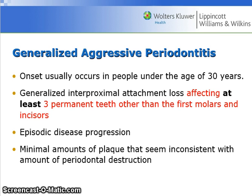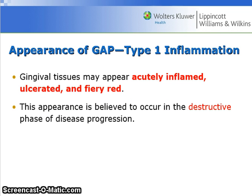Generalized aggressive periodontitis usually has an onset in people under the age of 30. It is generalized interproximal attachment loss affecting at least three permanent teeth other than the first molars and incisors. It has an episodic disease progression and the minimal amounts of plaque seem inconsistent with the amount of periodontal destruction. This appearance of GAP type 1 inflammation: gingival tissues may appear acutely inflamed, ulcerated, and fiery red, which is believed to occur in the destructive phase of disease progression.